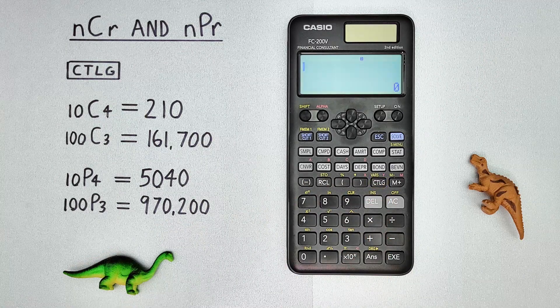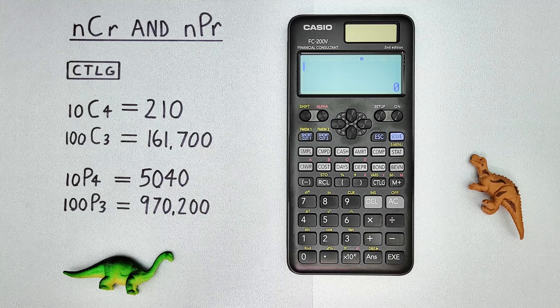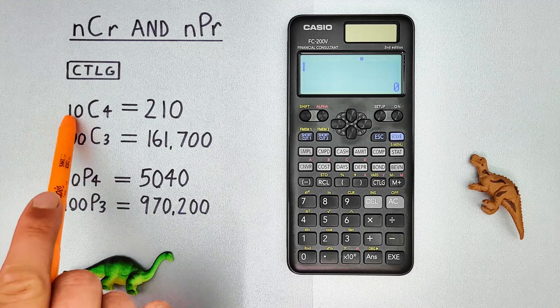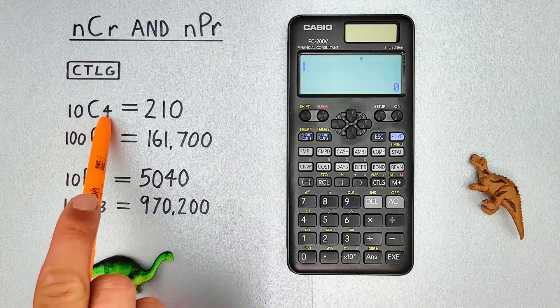First, we'll look at combinations, which is when you choose a number of items from a set and the order you choose them does not matter. For example, if we had a set of 10 and wanted to choose 4 items.